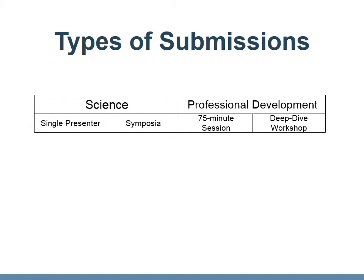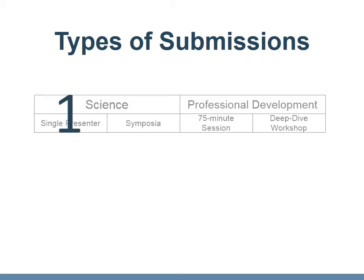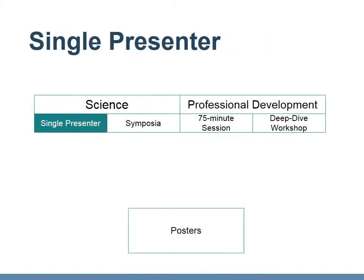You may submit up to three different entries: one in single presenter science, one symposia, and one professional development. To increase your odds of being accepted, be sure to submit proposals in all three categories.